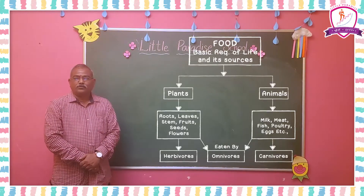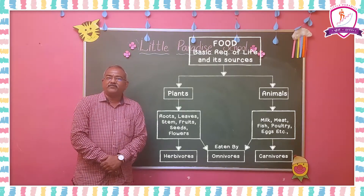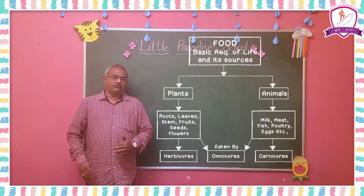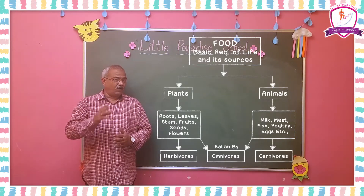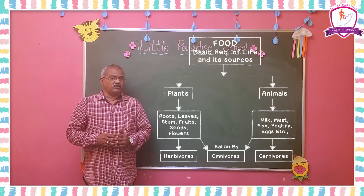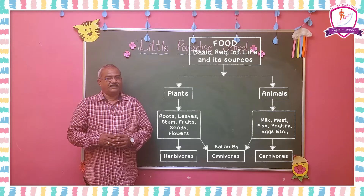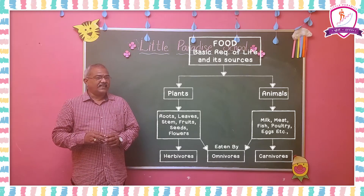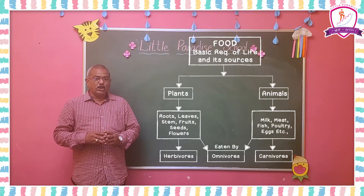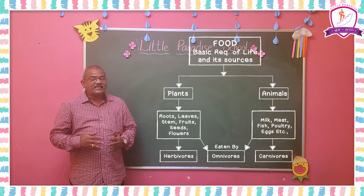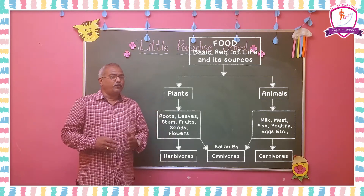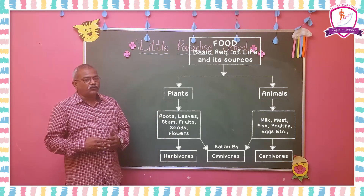Children, observe the mind map. In this mind map, see what is there in the first box — Food. It is the basic requirement of life. Plants and animals are two main sources of food.